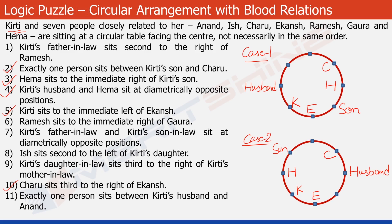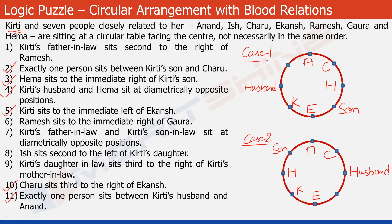Now we look at statement 11. It says that exactly one person sits between Kirti's husband and Anand. In Case 1, this is Kirti's husband — there are two possibilities, but the lower one is already occupied by Ekanch, so Anand has to occupy the position on top. Let's put A here. In Case 2, this is Kirti's husband — again two possibilities, but the lower one is occupied by Ekanch, so this would be the position. Let's put A here as well.